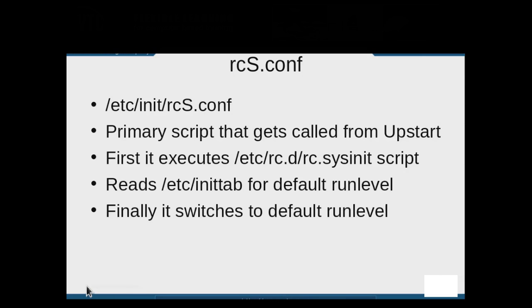The main script called first during system startup is the /etc/init/rcs.conf file. This script then executes the /etc/rc.d/rc.sysinit script. After rc.sysinit completes, the rc.conf script reads in the default run level for the system from the /etc/inittab file. Once the default run level is determined, rcs.conf then switches the system to that run level.